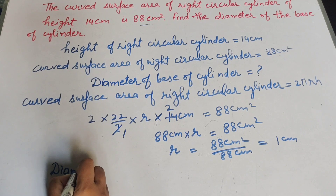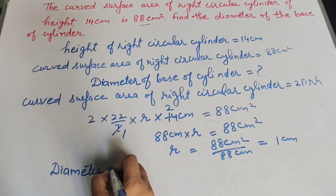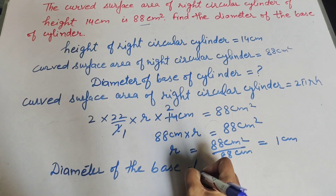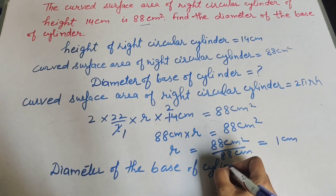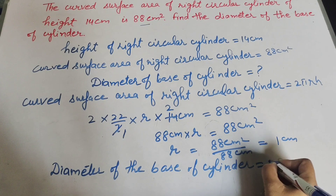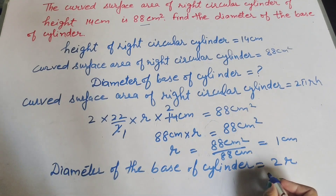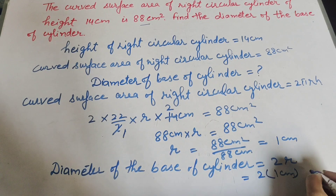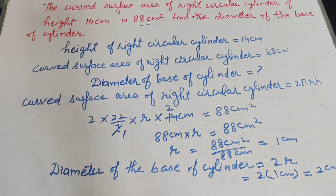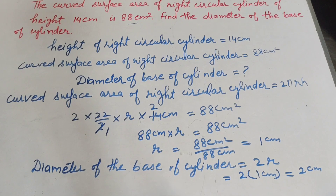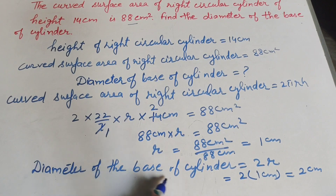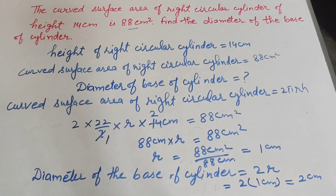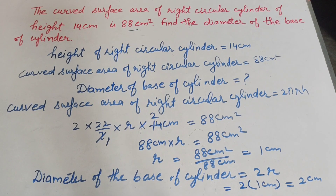Now we find the diameter of the base of the cylinder. Diameter equals 2r = 2 × 1 cm = 2 cm. So the diameter of the base of the cylinder is equal to 2 cm.